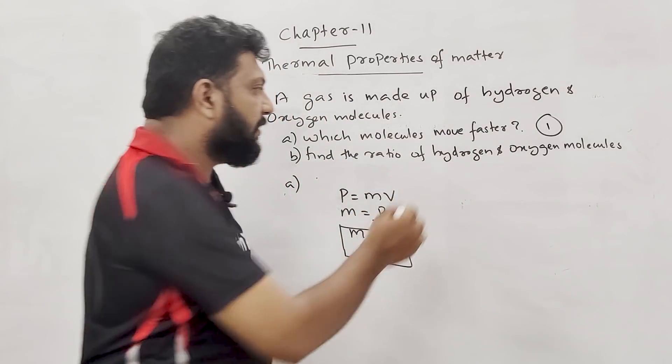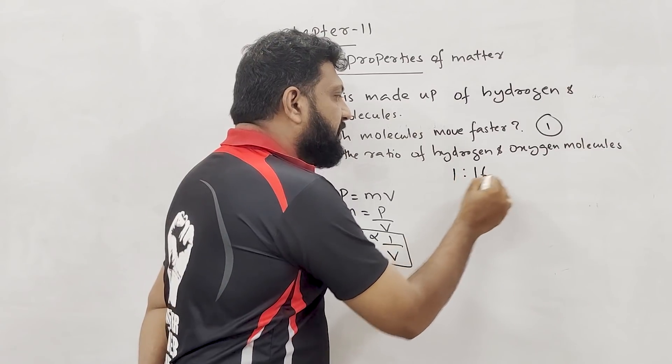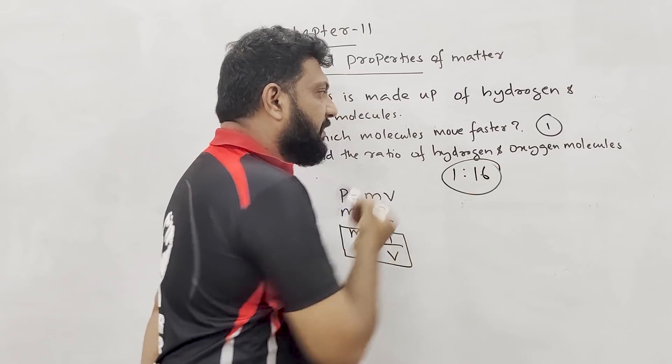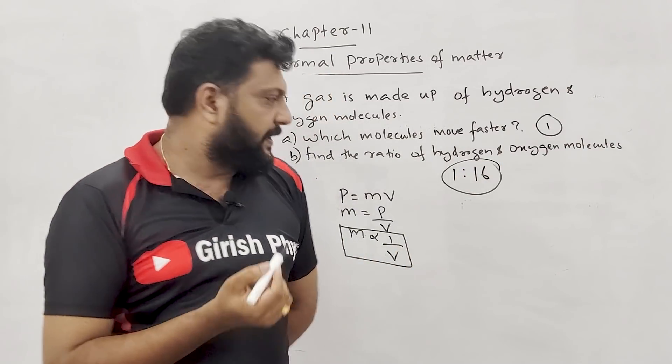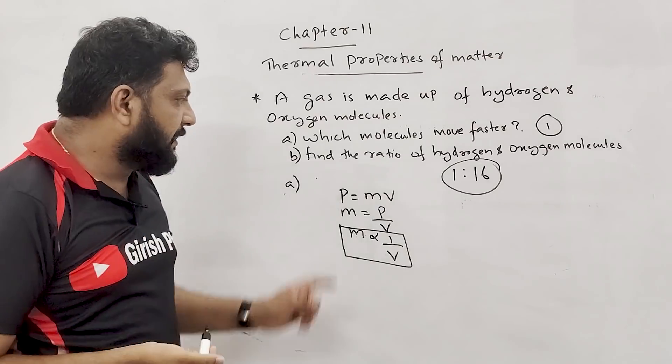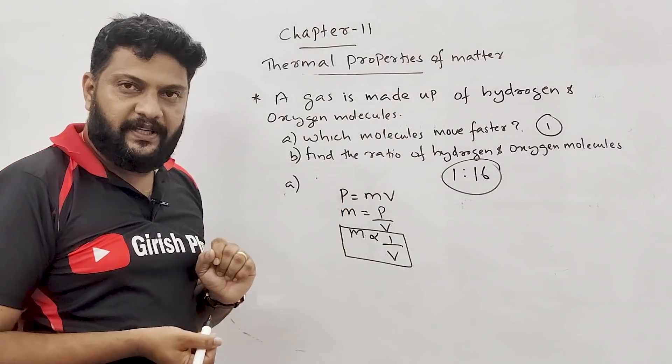Hydrogen is 1, oxygen is 1 — ratio. That's how P is equal to mV.